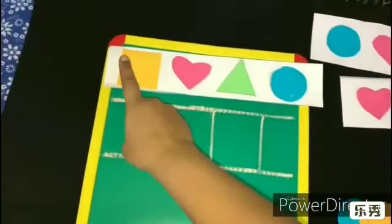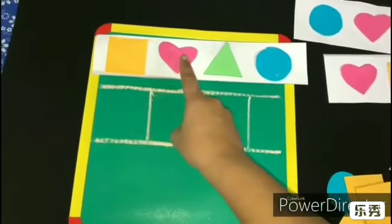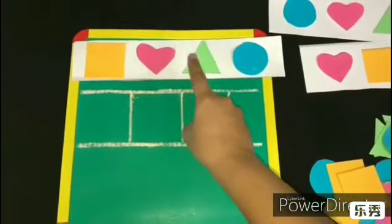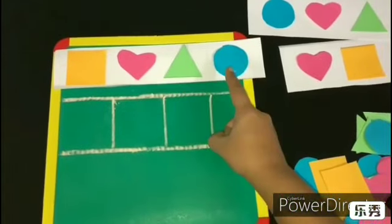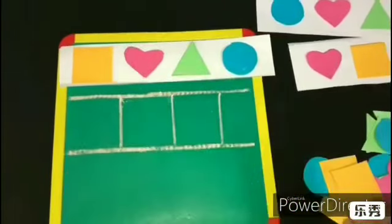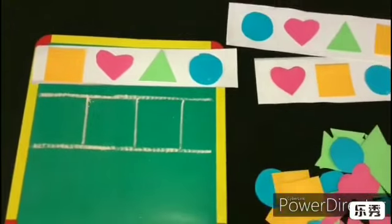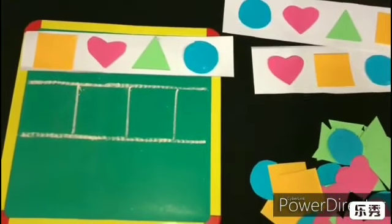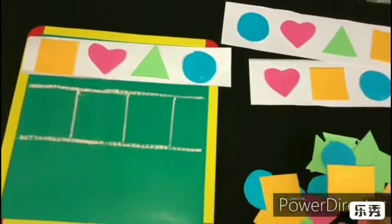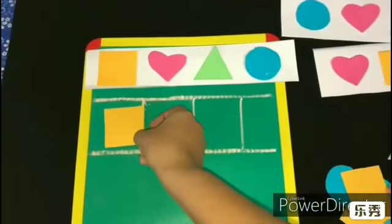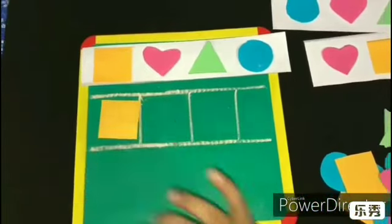The first shape is square. Second is heart, triangle and circle. Now what we have to do is find the shapes according to the stencil. The first shape is square. We are going to place it here.